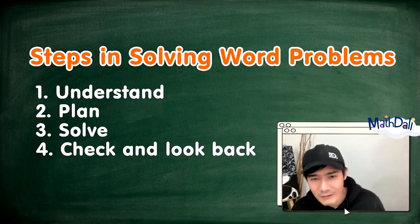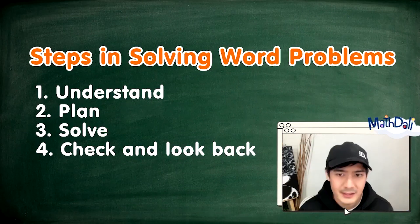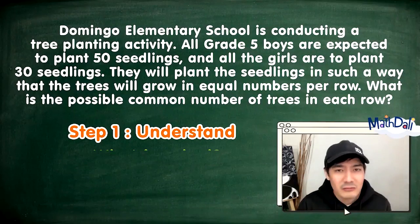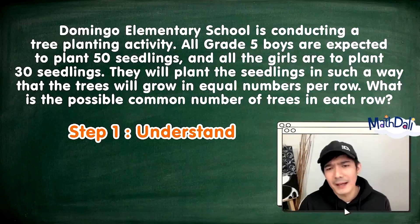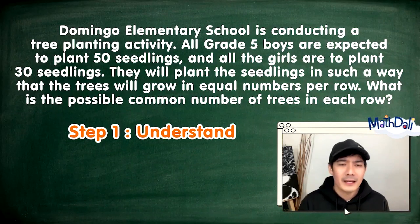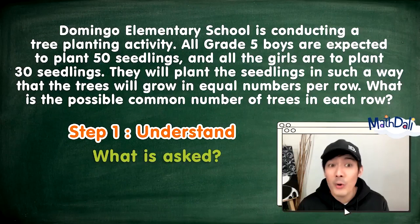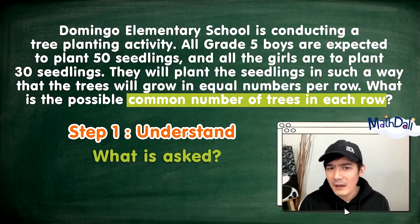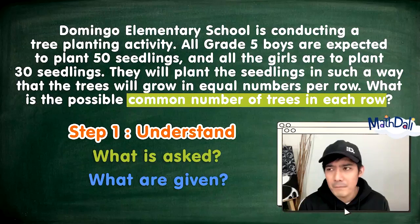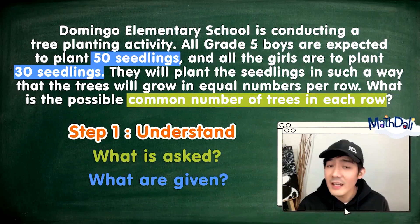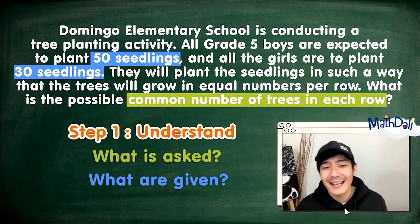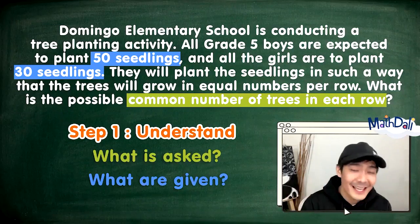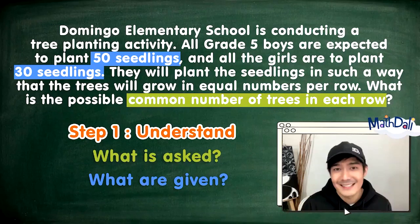Very good. Let's solve the problem using our step-by-step process. Step one: let's understand the problem. Intindihin muna natin yung problema. Ang hinahanap sa problem ay yung common number of trees in each row. Pero ilang seedlings ba meron tayo? Meron tayong 50 at 30. Ang kailangan lang pala natin hanapin ay yung common factors ng 50 at 30. Yan lang yun.